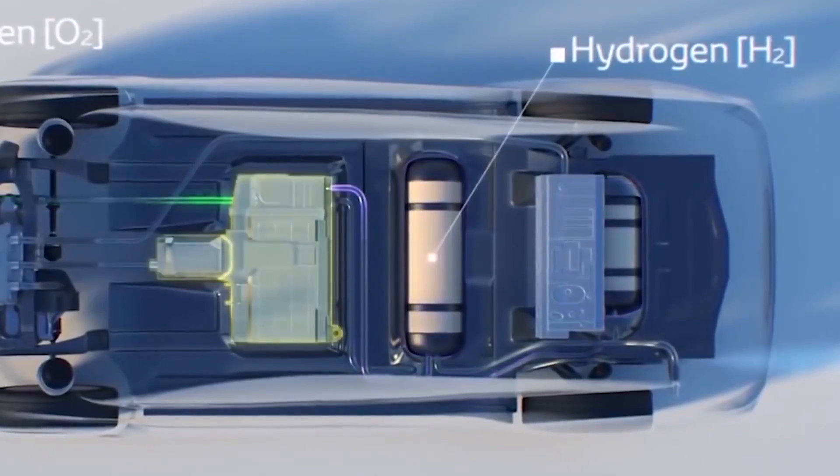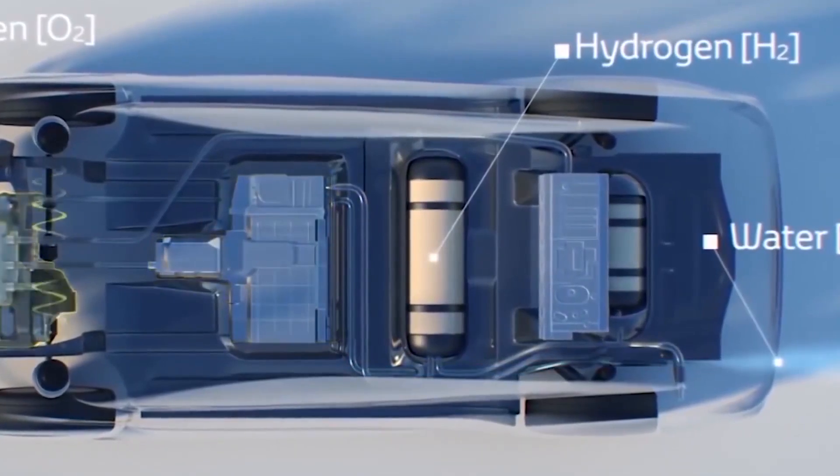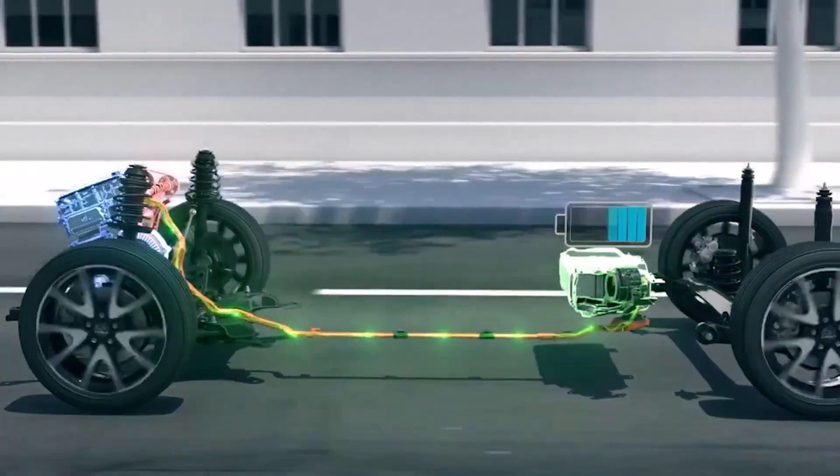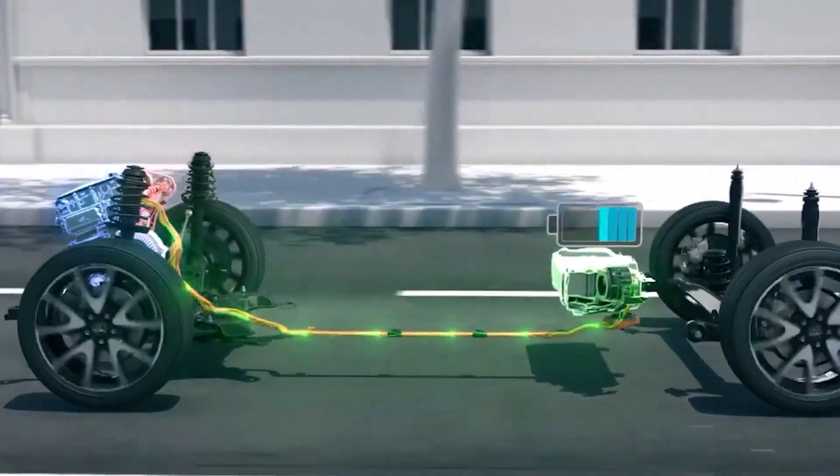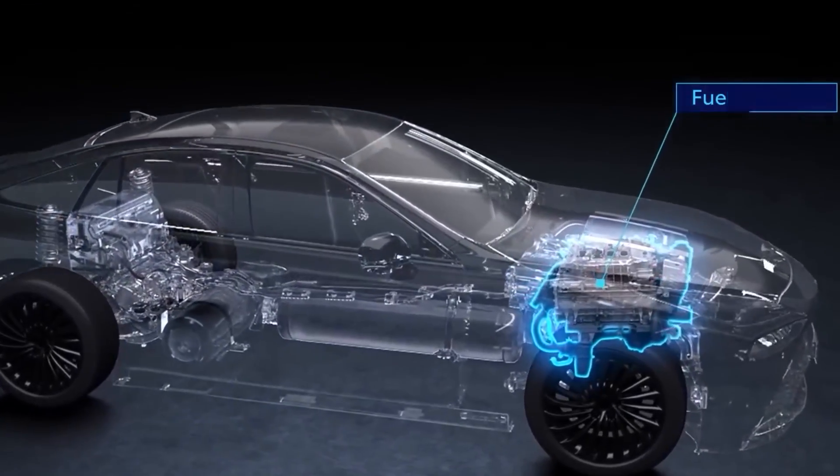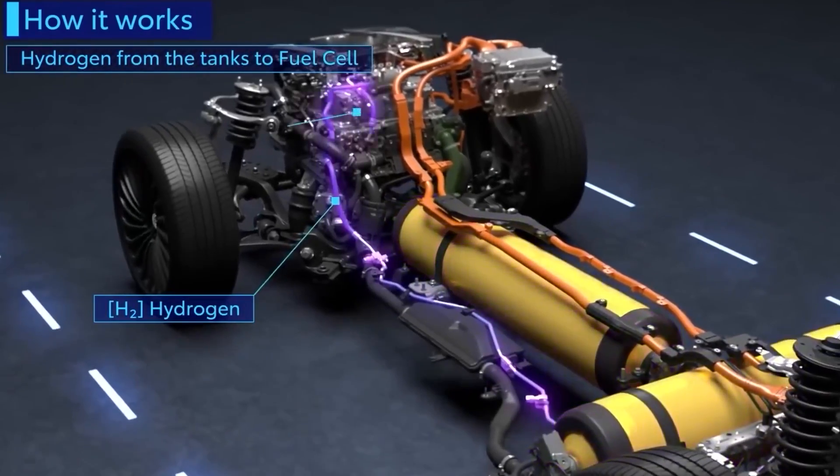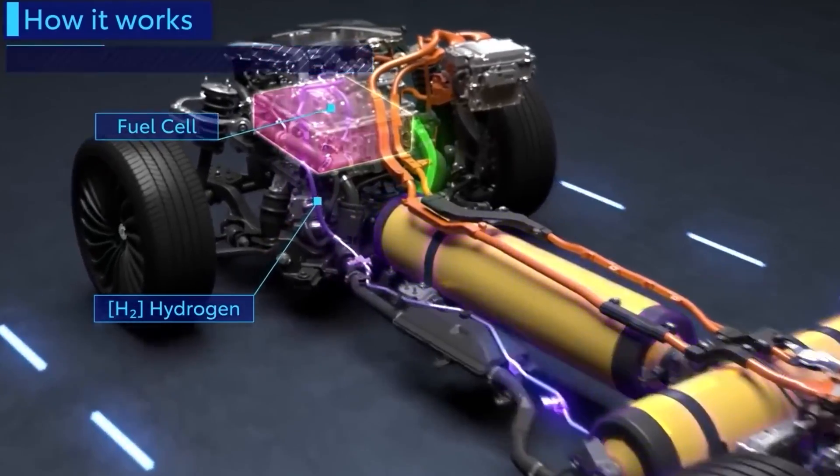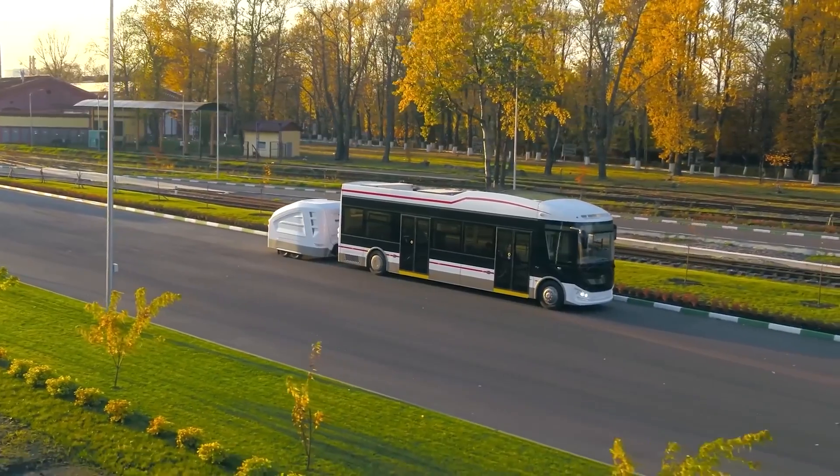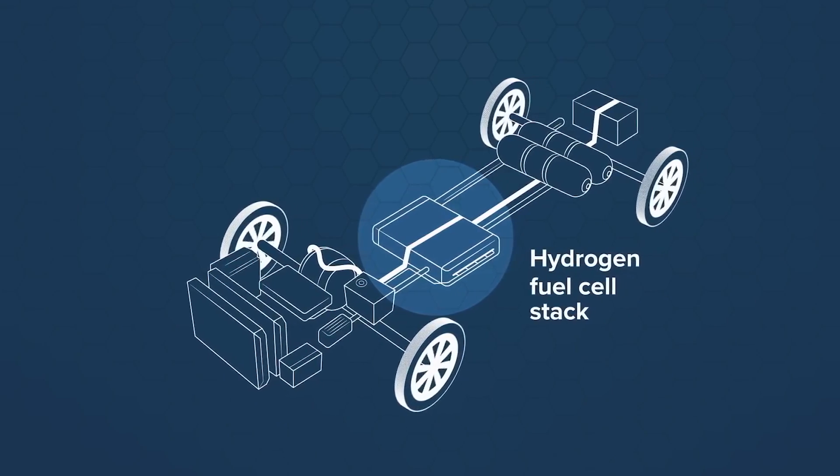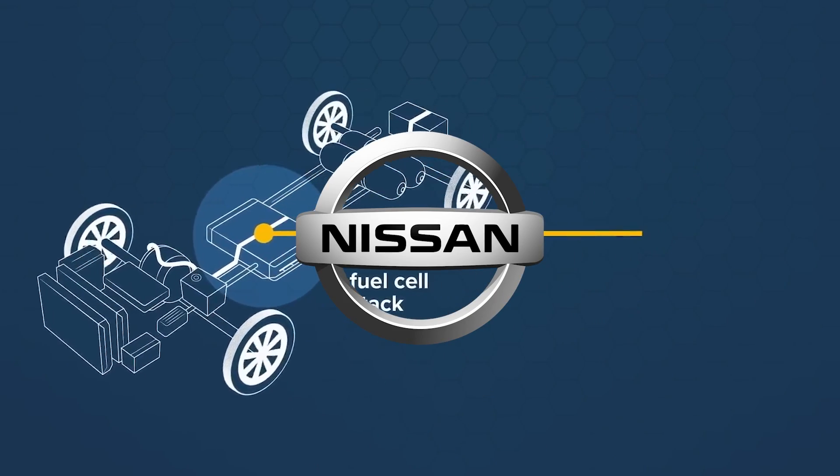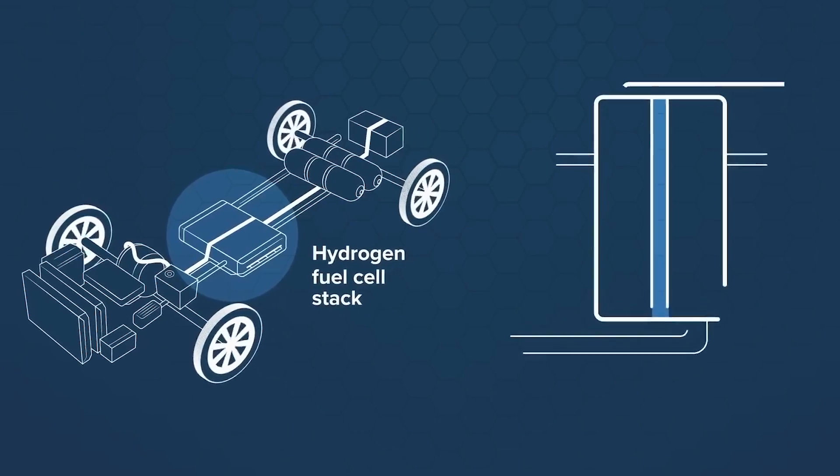Furthermore, hydrogen fuel cells offer superior energy density compared to batteries, meaning they can store more energy within a given volume. This characteristic makes them particularly suitable for applications where weight and space considerations are crucial, such as commercial vehicles and larger passenger cars. By focusing on hydrogen FCVs, Nissan can tap into these segments and potentially expand its market reach.